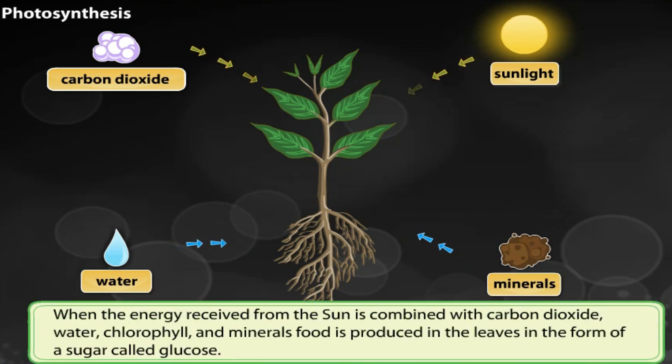When the energy received from the sun is combined with carbon dioxide, water, chlorophyll and minerals, food is produced in the leaves in the form of a sugar called glucose.